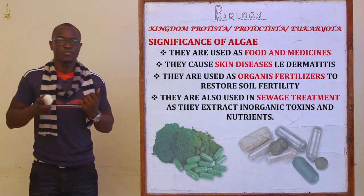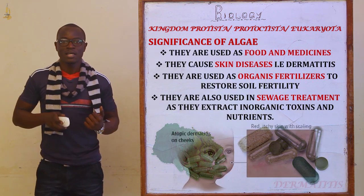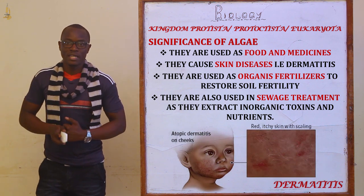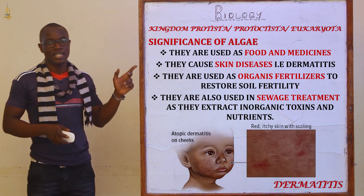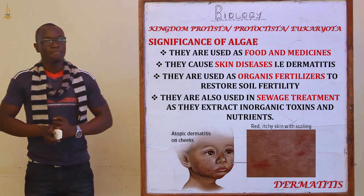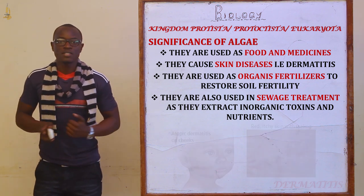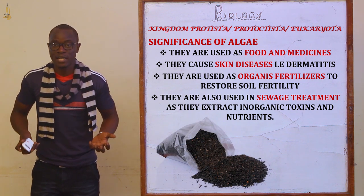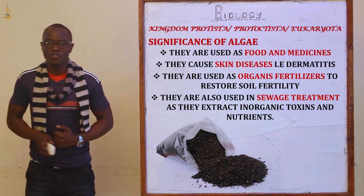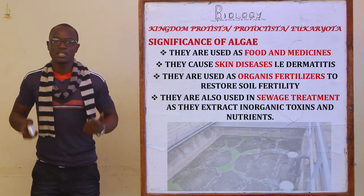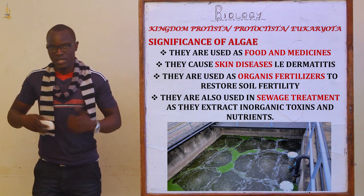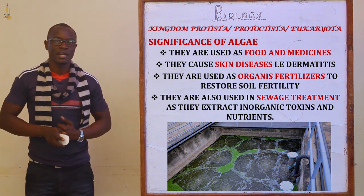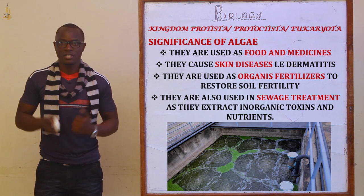Nature also helps in soil formation through algae. They are also used as food and medicine, as well as causing different types of diseases, especially one called dermatitis. They are also used as organic fertilizers to restore soil fertility. They are also used in sewage treatment, where they extract organic toxins and nutrients from dirty water being treated.